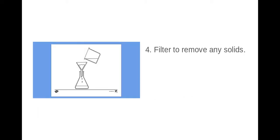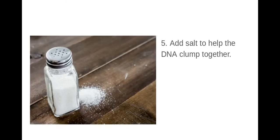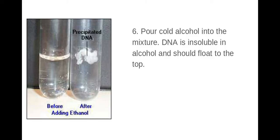Once we've done that, we then filter to remove any solids, and then with the product that we've got left we're going to add salt to help clump that DNA together. However, it's easier to extract via precipitation once we've poured cold alcohol over the top. The reason why is because DNA is insoluble in alcohol, so it should float to the top as you can see in that image there.